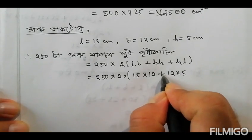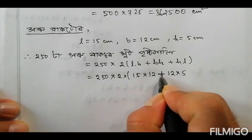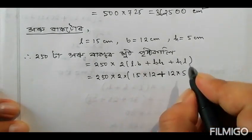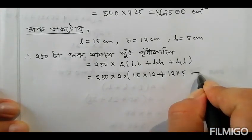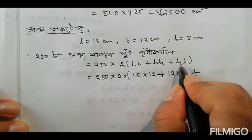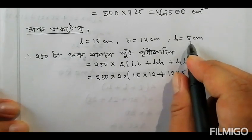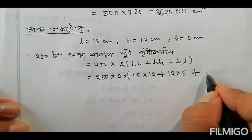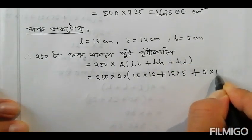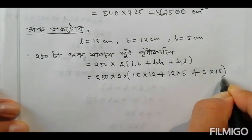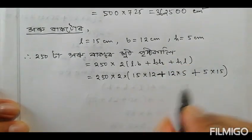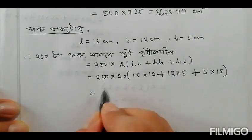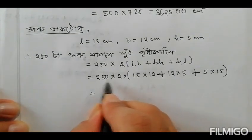Plus h into l, which means 5L is 15. So 5 into 15. Let's complete this calculation.